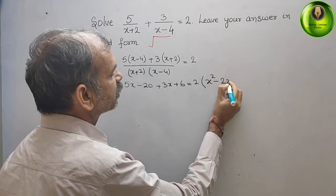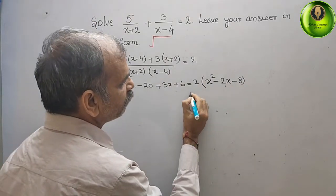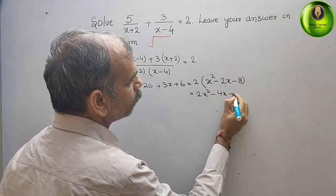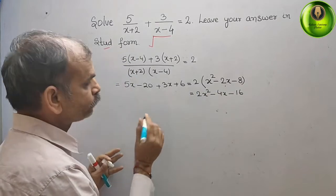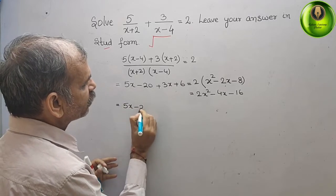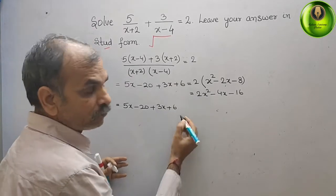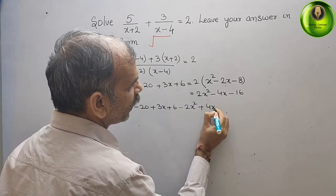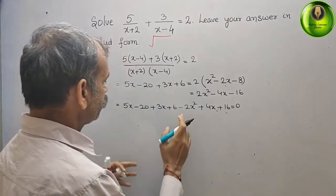Continuing the expansion: 2(x+2)(x-4) gives 2x² - 4x - 4x - 16, which is 2x² - 8x - 16. Bring everything to the left side: 5x - 20 + 3x + 6 - 2x² + 4x + 4x + 16 = 0.